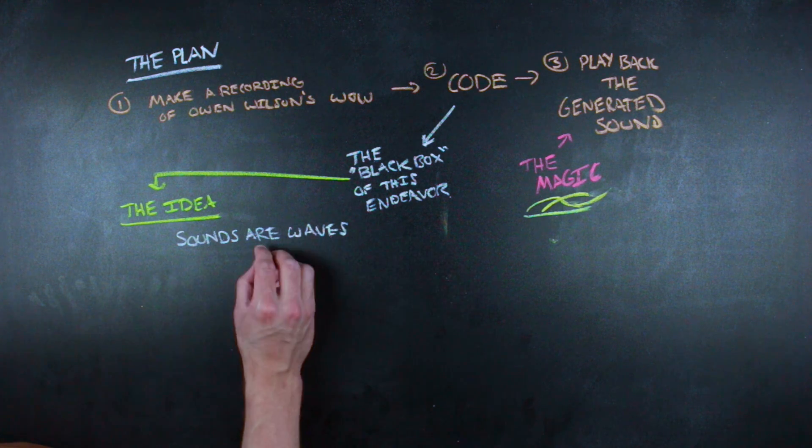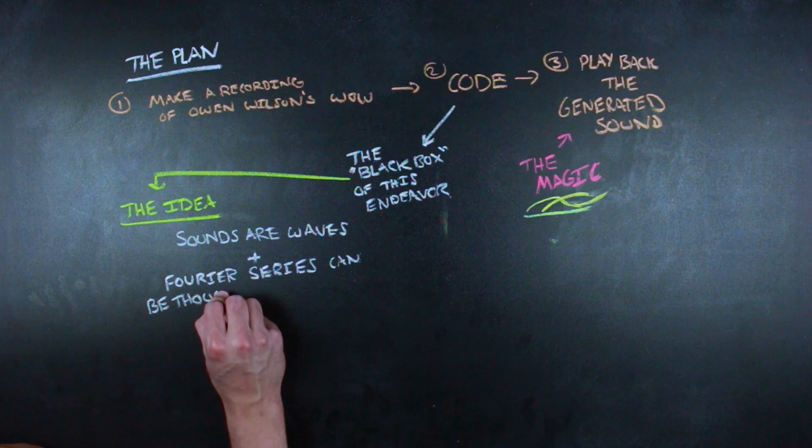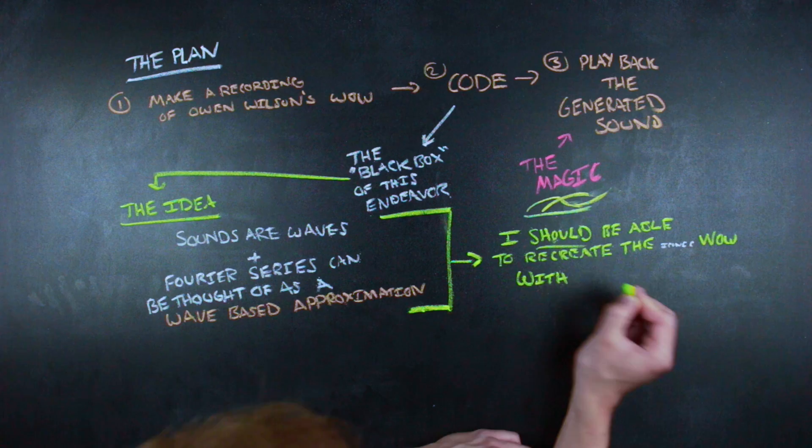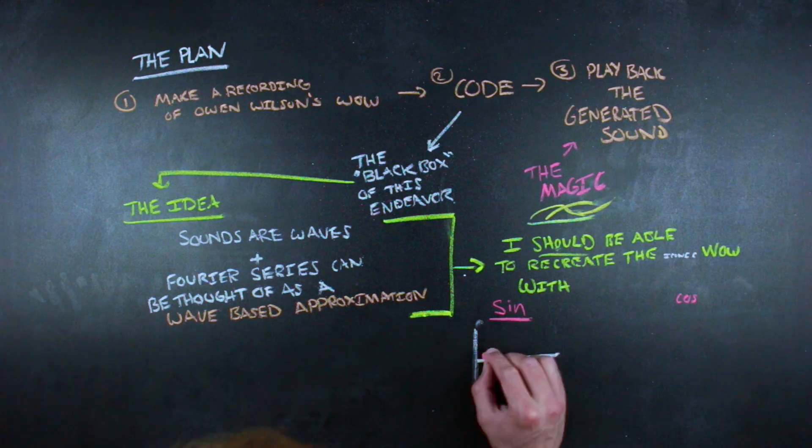The idea behind this three-pronged plan is just a bit of surface level Fourier analysis. One, sounds are waves. Two, Fourier series can be used to approximate waves with cosine and sine functions. Three, from one and two, I should be able to make the wow with cosine and sine functions.